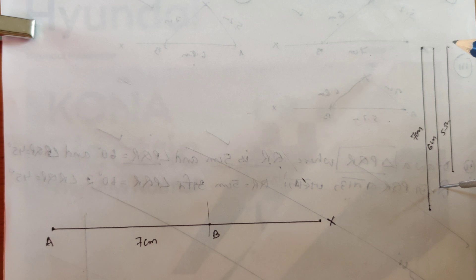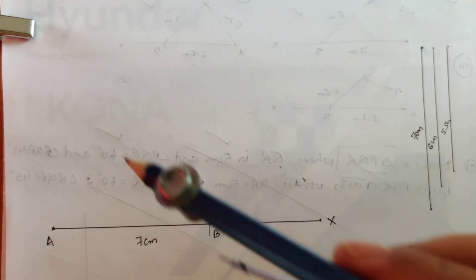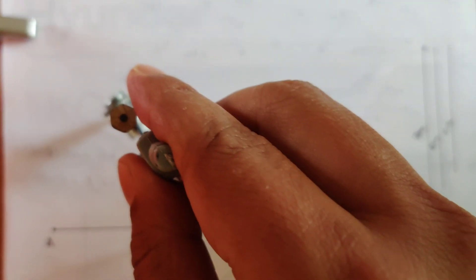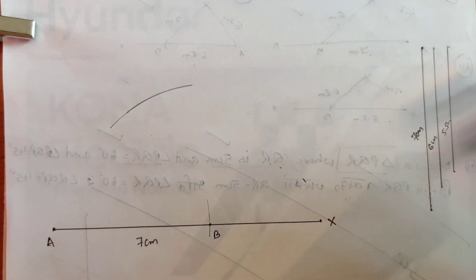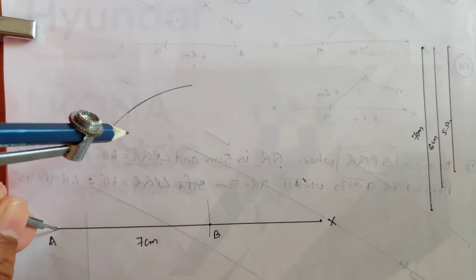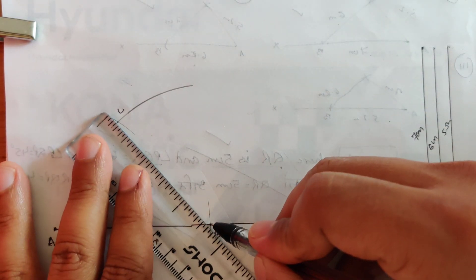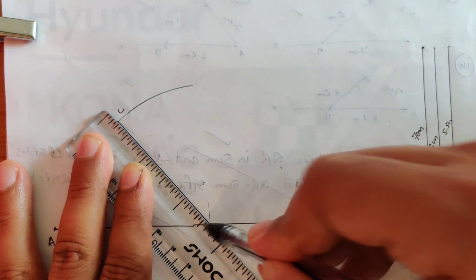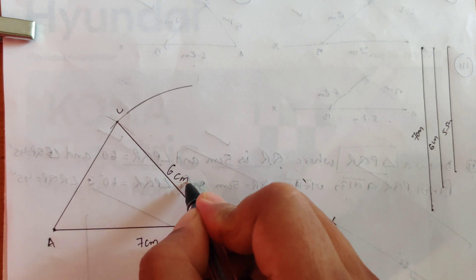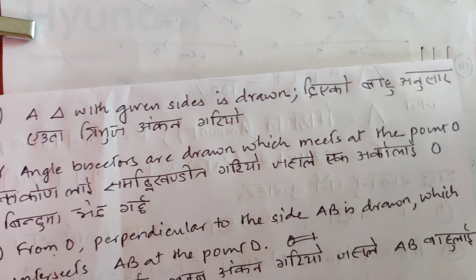I've already measured 7 cm. Now let's measure the other sides. From B I take 6 cm, and from A I take 5.5 cm. I've measured precisely and now I have point C. This side is 6 cm and this side is 5.5 cm. Step one — a triangle with given sides is drawn.